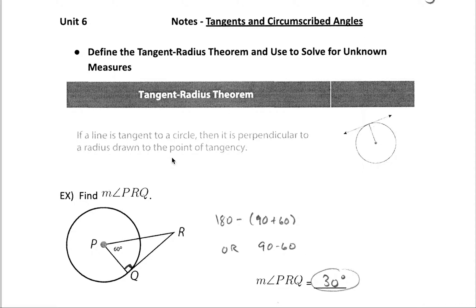So first let's talk about this tangent-radius theorem. This says that if you have a tangent line to a circle, the radius will always be perpendicular to that line at that point of tangency.